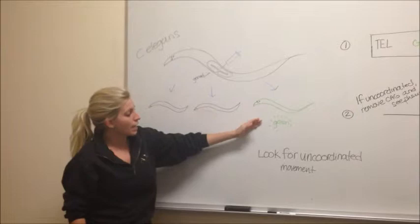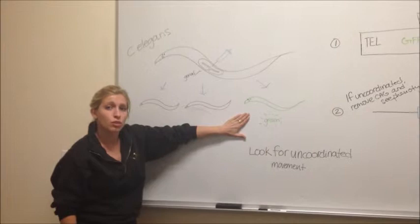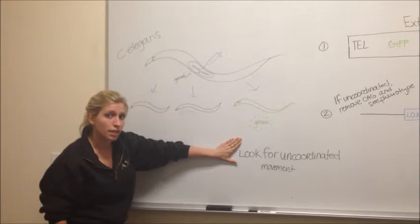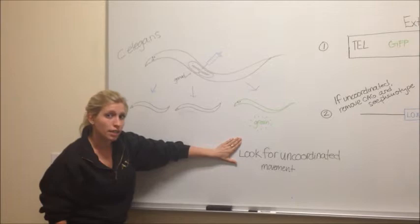HTT causes neural degeneration. However, in C. elegans, there is no apoptosis of mature neurons, so we can't look for cell death. We would look for uncoordinated movement. And if we see uncoordinated movement, we can then flox out the repeats in the HTT gene, create a new extra-chromosomal array and do the experiment again, this time looking for coordinated movement.